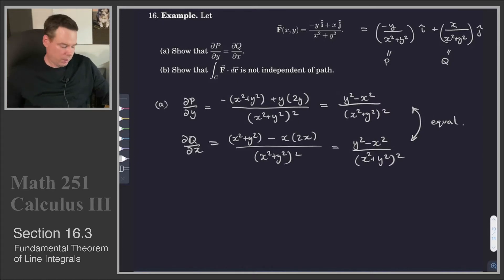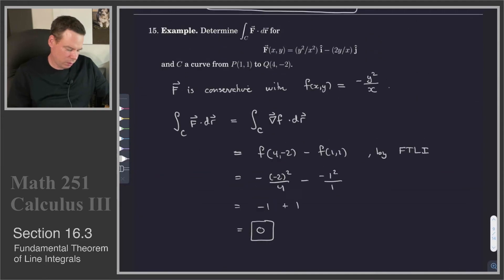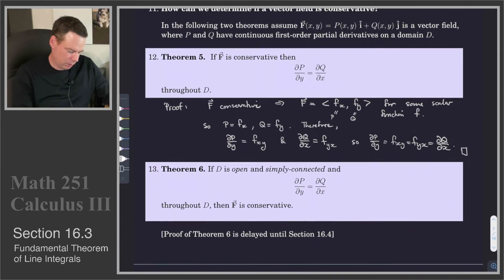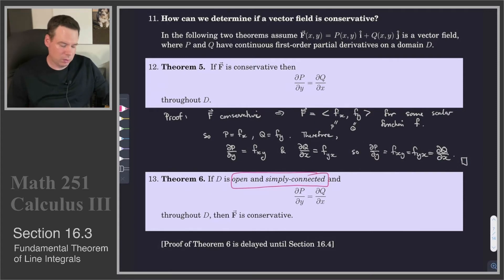At this point you might say: ∂P/∂y equals ∂Q/∂x, so this is a conservative vector field. Unfortunately, that's not the case. Remember Theorem 6: if ∂P/∂y equals ∂Q/∂x and the domain we are on is open and simply connected, then the vector field is conservative. So we need that additional condition — that it's open and simply connected.